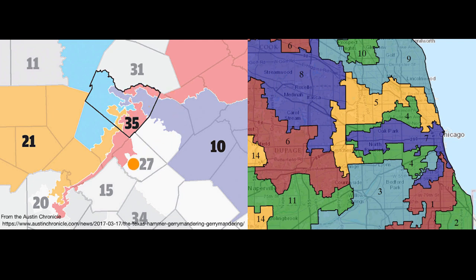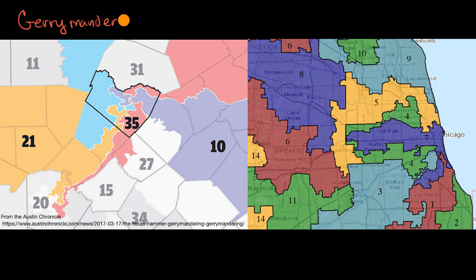The question that should be surfacing in your brain is: why are these districts shaped that way? The answer that many people will give you is it's because of gerrymandering — shaping districts to benefit one political party or another. Every 10 years, there's a US Census, and based on that census, different states might get a few more or a few less representatives. So state legislatures will often have to redistrict, and that's when this occurs.